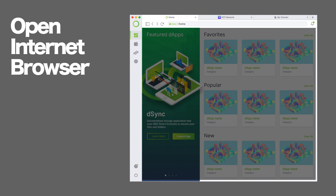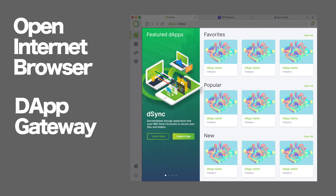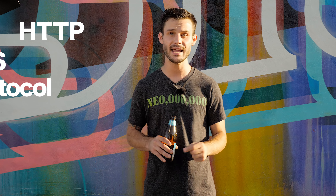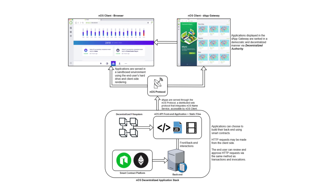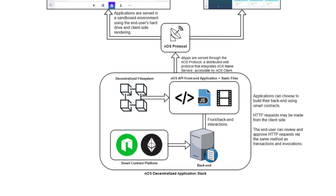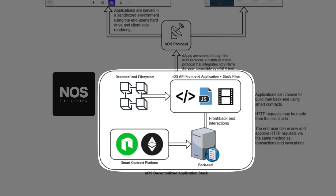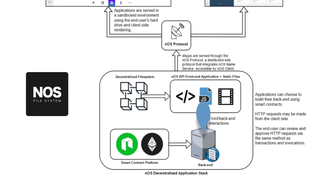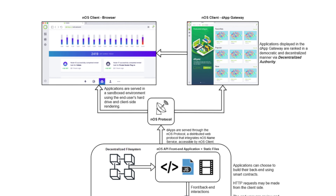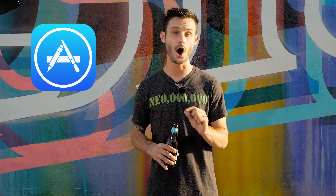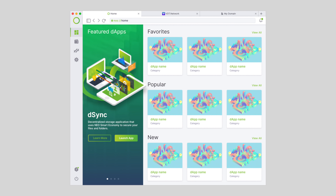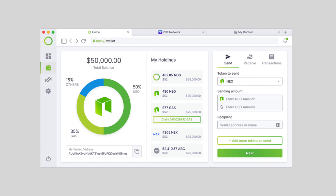Let's dig into the nOS client. The nOS client MVP for developers is live and can be used to build dApps right now. For users, the nOS client user interface is live and includes the open internet browser and the dApp gateway. The open internet browser supports both HTTP and the nOS protocol. Unlike HTTP, files served via the nOS protocol are first obtained from the nOS file system, then stored to a local sandbox environment on the end user's hard drive, and finally served to the end user from the client side — granting users complete control and insight over their interactions.